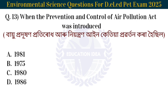Next question: When was the Prevention and Control of Air Pollution Act introduced? Bipodophon potriotha utorba neon ton ayn kitiya prabotan kora hoi shil. The answer is 1981. The Air Pollution Act was introduced in 1981.